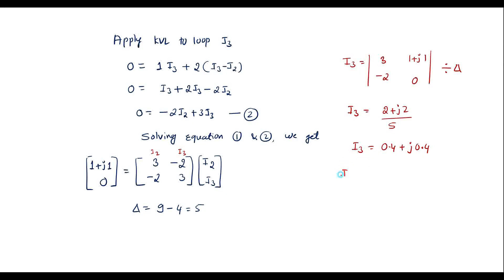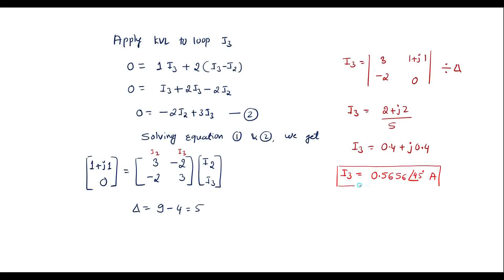In polar form, I3 equals 0.5656 at an angle of 45 degrees amps. This is the current through R — that is 0.5656 at an angle of 45 degrees. Thank you for watching.